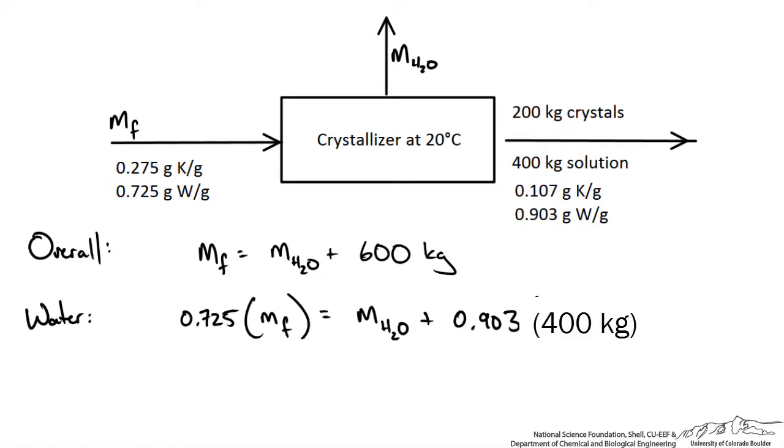So as you see, we have two unknowns and two equations we could solve for the mass flow rates. And I get the mass flow rate of water is equal to 268 kilograms of water being evaporated. And this is for a feed of 868 kilograms of our saturated potassium dichromate solution at 60 degrees Celsius.